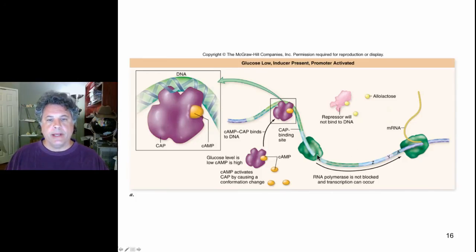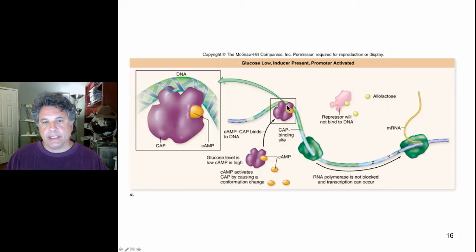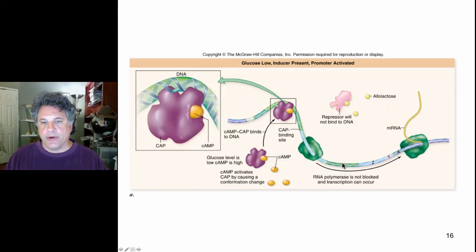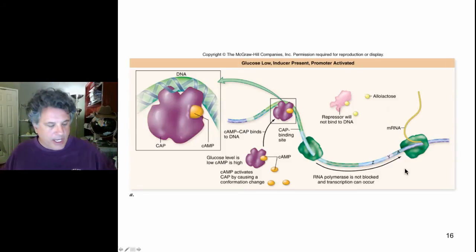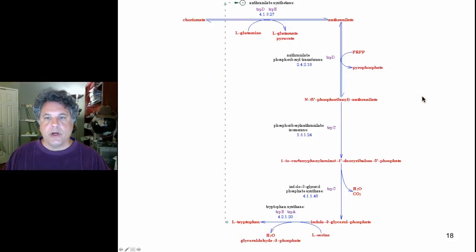To summarize: when glucose is low, cyclic AMP levels are high, CAP binds to the CAP binding site, and that activates the promoter. If lactose is also present, the conformation of the repressor changes so it is not bound to operator DNA, and transcription of the operon occurs — the cell then utilizes lactose. This demonstrates the ability of bacterial cells to lower expression of catabolic operons when glucose, the ideal energy source, is available.